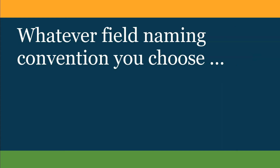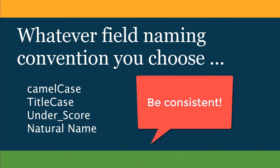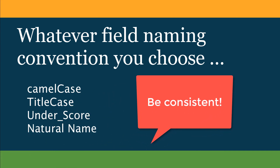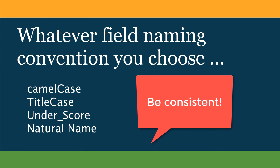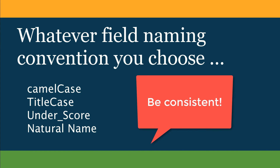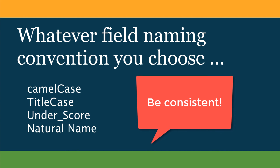Whatever field naming convention you choose — whether it's camel case, title case, underscore, or natural name — it's important that you be consistent. Being inconsistent with your naming conventions leaves people wondering why the difference. That's confusing, causes mistakes, and slows things down. Being consistent means that people find the database easy to use, follow, and understand.